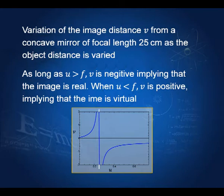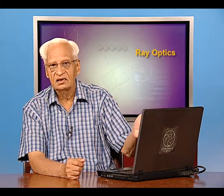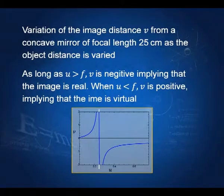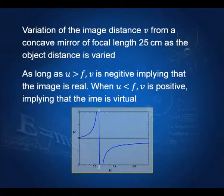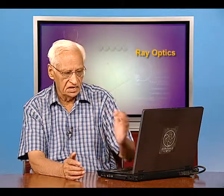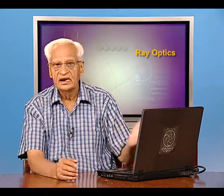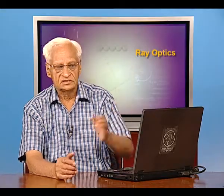When U is less than the focal length — that is, the object is nearer to the mirror than the focal length — then V becomes positive, showing that the image is virtual. Let us try a few examples.